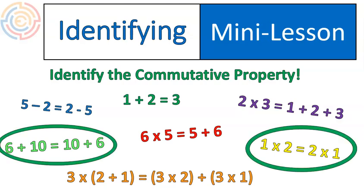Were you able to identify the commutative property of multiplication in yellow? 1 times 2 equals 2 times 1. And the commutative property of addition, 6 plus 10, is equal to 10 plus 6.